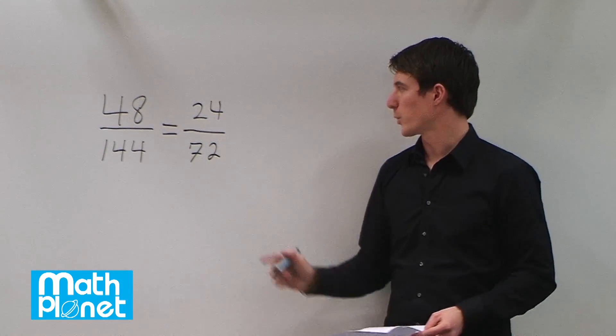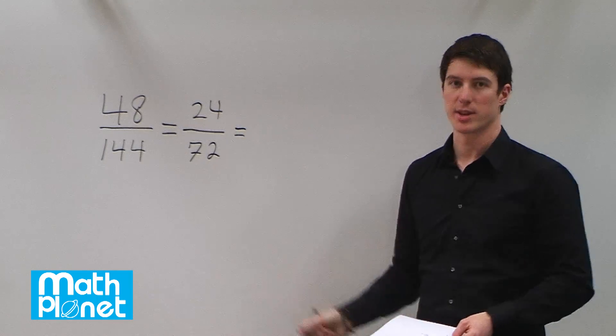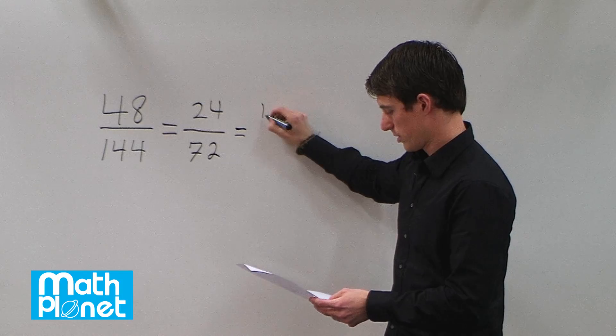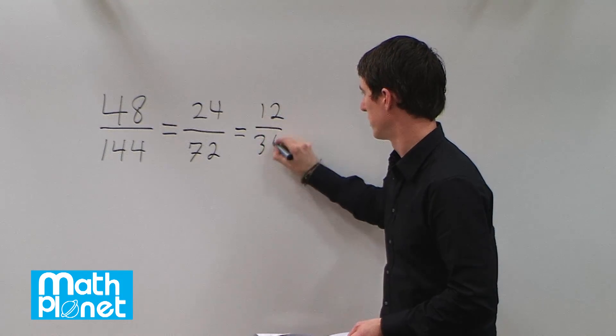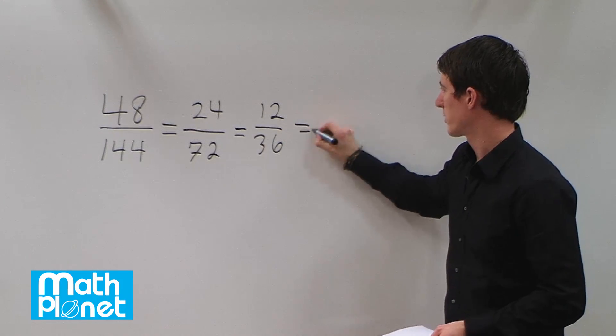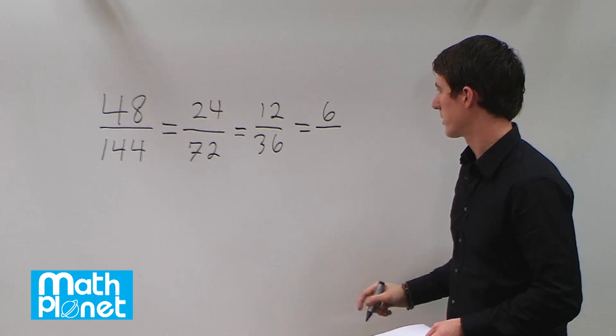They're still even, so we can divide both by 2 again. It's not necessarily the fastest way to do it, but it's an easy way. If they're even numbers, you can always see that. That gives us 12 over 36. Again, they're still even. Let's just keep going. 12 divided by 2 is 6, and 36 divided by 2 is 18.